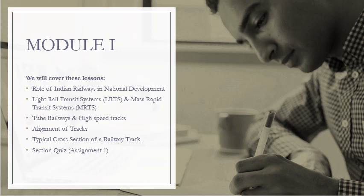Module 1 deals mainly with the role of Indian Railways in national development. We will then learn about light rail transit systems and mass rapid transit systems, tube railways, and high-speed tracks. The main part of this module is the alignment of tracks — from an exam perspective, focus more on this topic, as we will have some problems in this section. We will also learn about the typical cross-section of a railway track, and towards the end there will be section queues considered as Assignment 1.